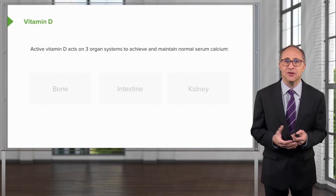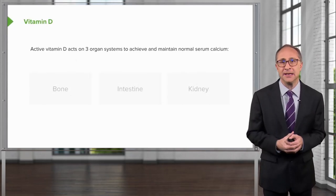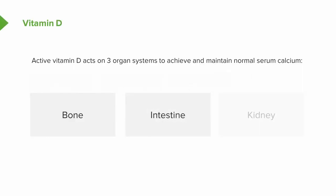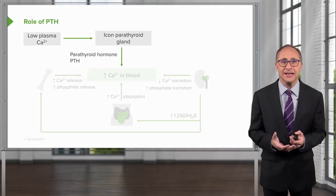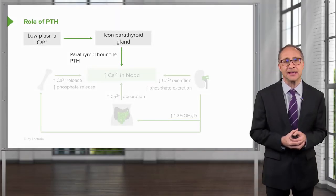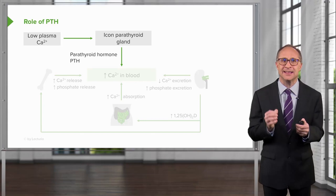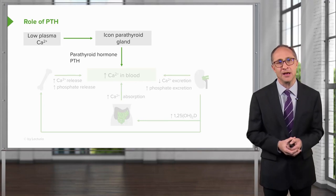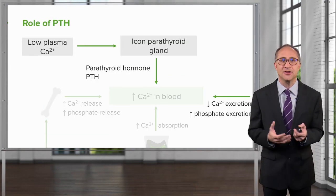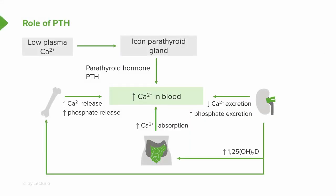Active vitamin D acts on three organ systems to achieve and maintain normal serum calcium: bone, intestine, and kidney. PTH is secreted to increase calcium in the blood in response to even the slightest degree of hypocalcemia. PTH acts on the kidney to increase production of active vitamin D and to promote calcium resorption in the distal convoluted tubule and the loop of Henle. PTH also acts on bone to activate calcium and release it into the bloodstream.